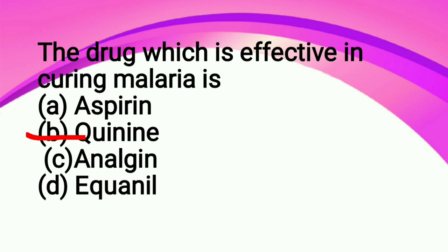And morphine is: option A anesthetic, option B equaniline, option C analgesic, option D antibiotics. So morphine is an analgesic, and it is a type of narcotic analgesic. As I mentioned earlier, analgesics are of two types, so morphine is an example of narcotic analgesic.